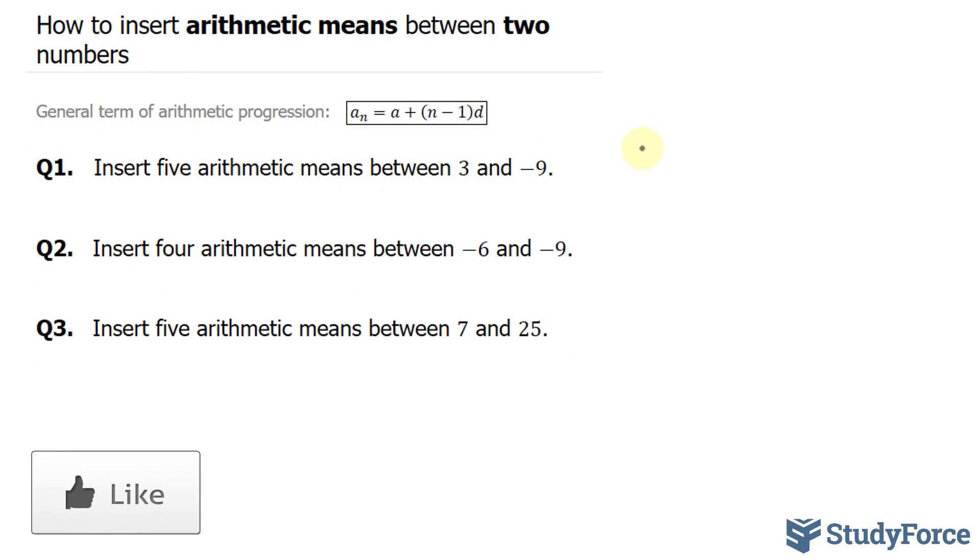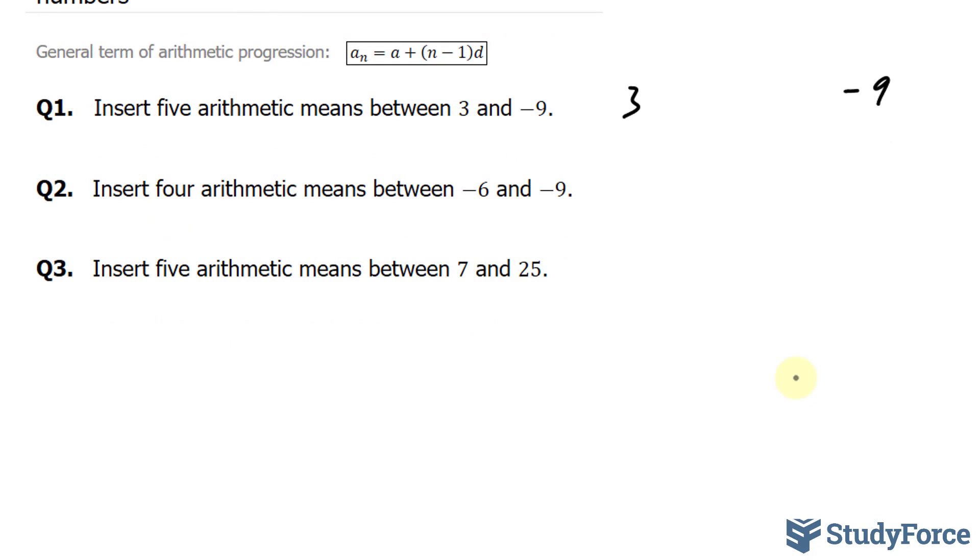We're told that in question one, we start at 3, then we end at negative 9. Now, we haven't been told the difference between each number in this series. But we do know that there are seven numbers in total, because they give us two of the numbers and they want us to find five more in between. So let's write down what we know.